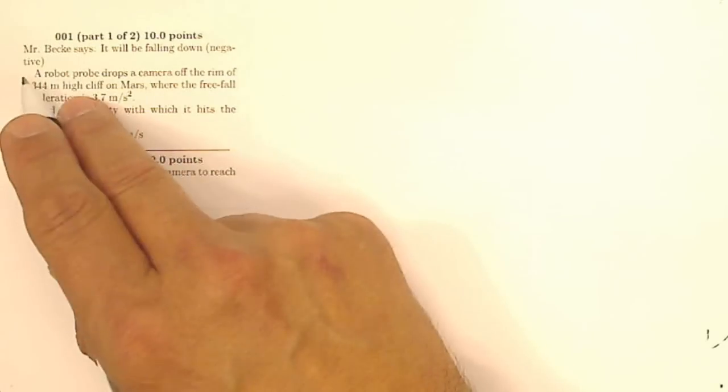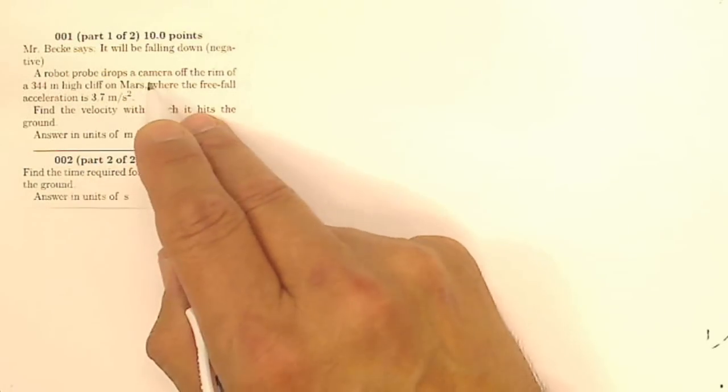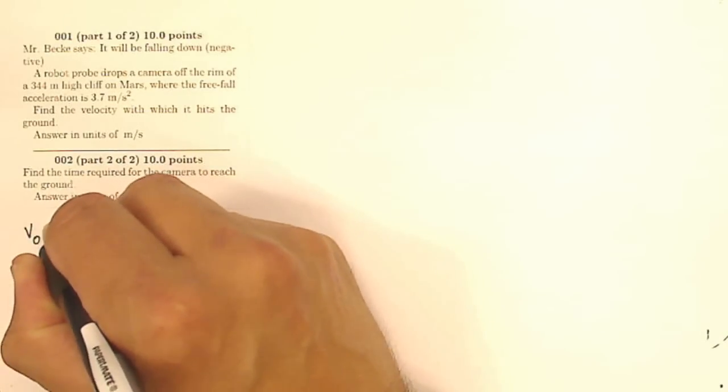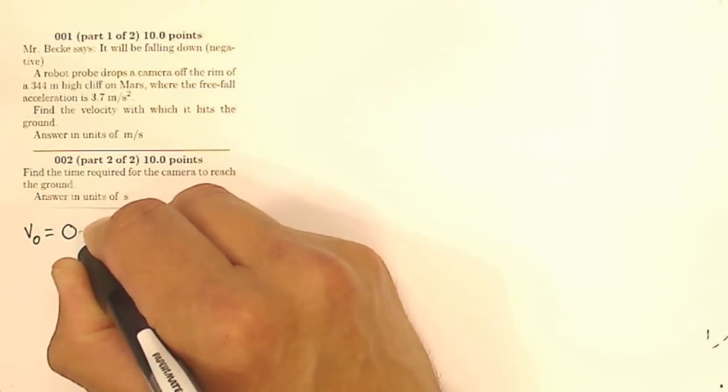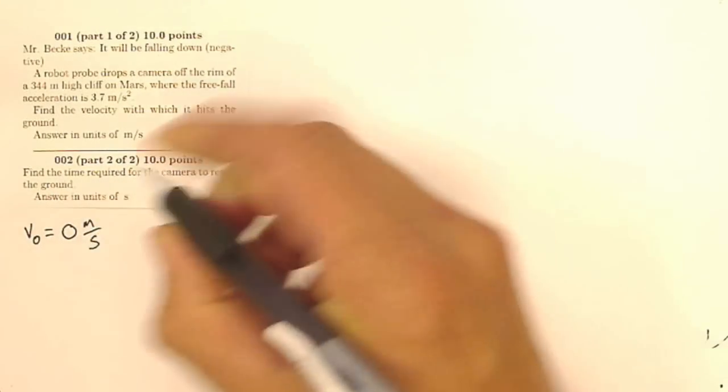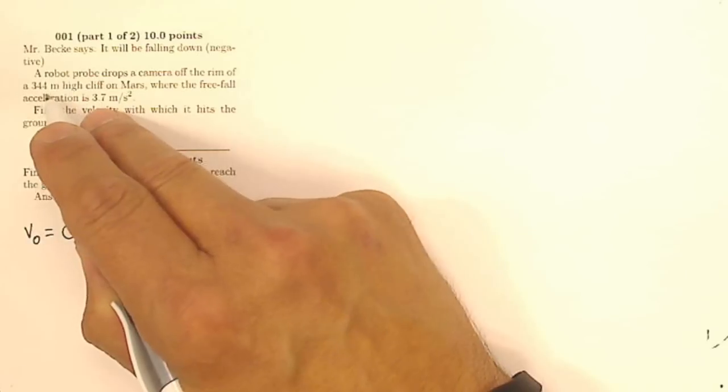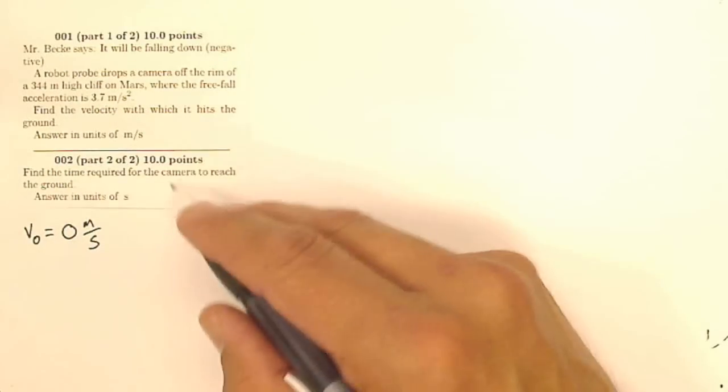Well, let's see what I know. A robot probe drops a camera. If it drops a camera, what I can tell is that my initial velocity for that camera is going to be zero meters per second. That's a little trick. It drops a camera, so it's going to start at zero. Drops a camera off of the rim of a 344 meter high cliff. Well, once it falls...